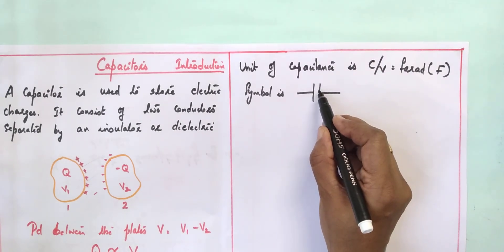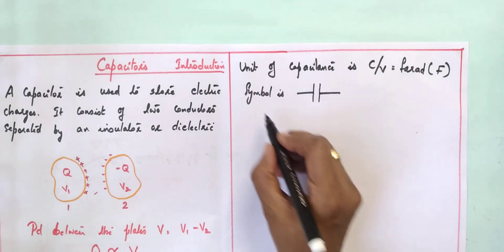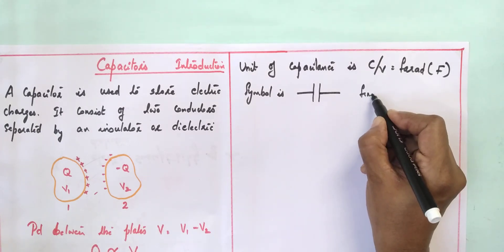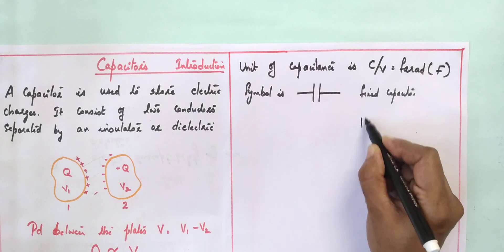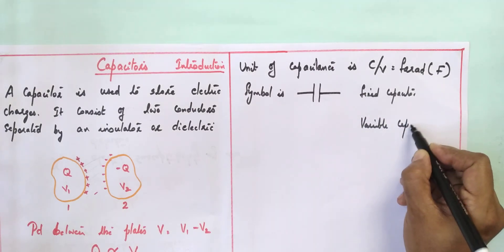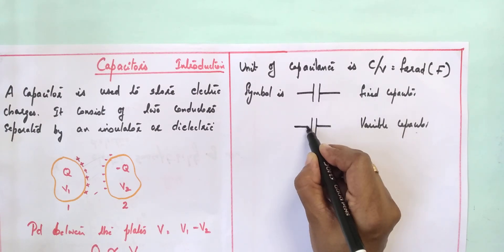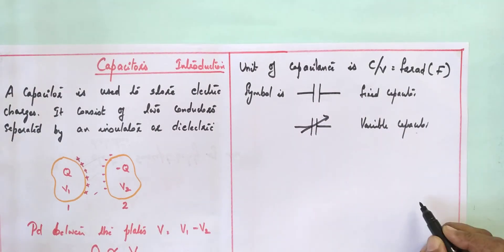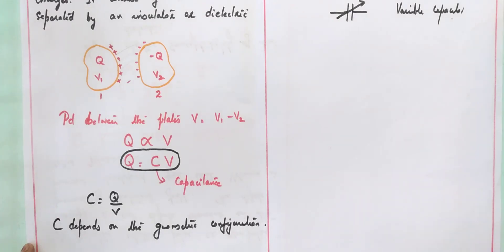The symbol with two plates represents a fixed capacitor. For a variable capacitor, the symbol shows two plates with an arrow through them. Usually, the farad is considered to be a very large unit for practical capacitors.